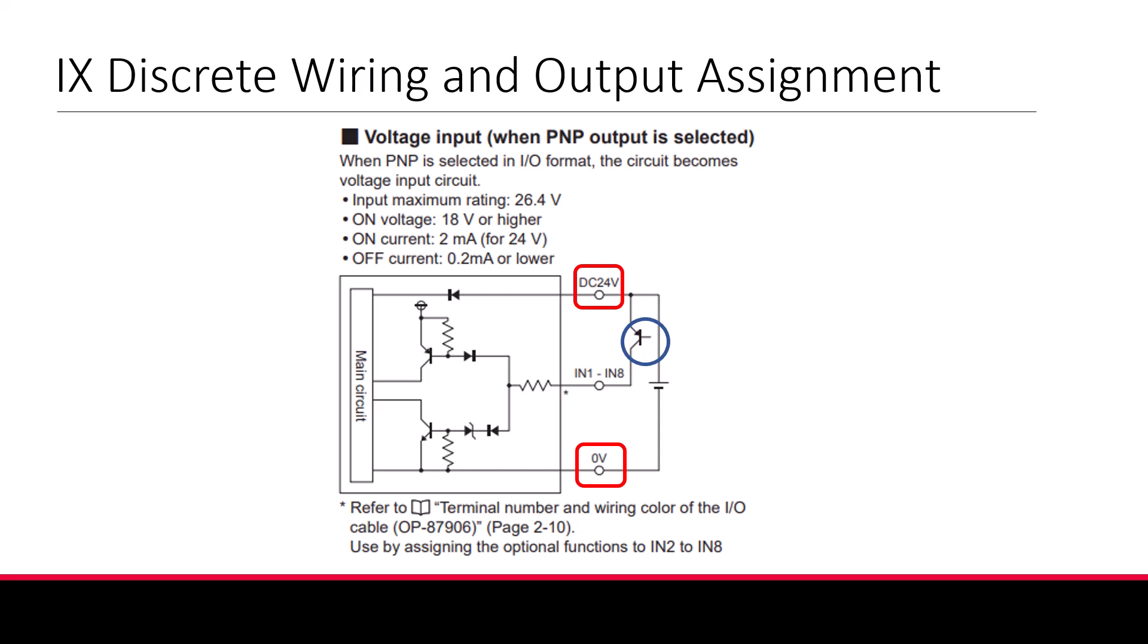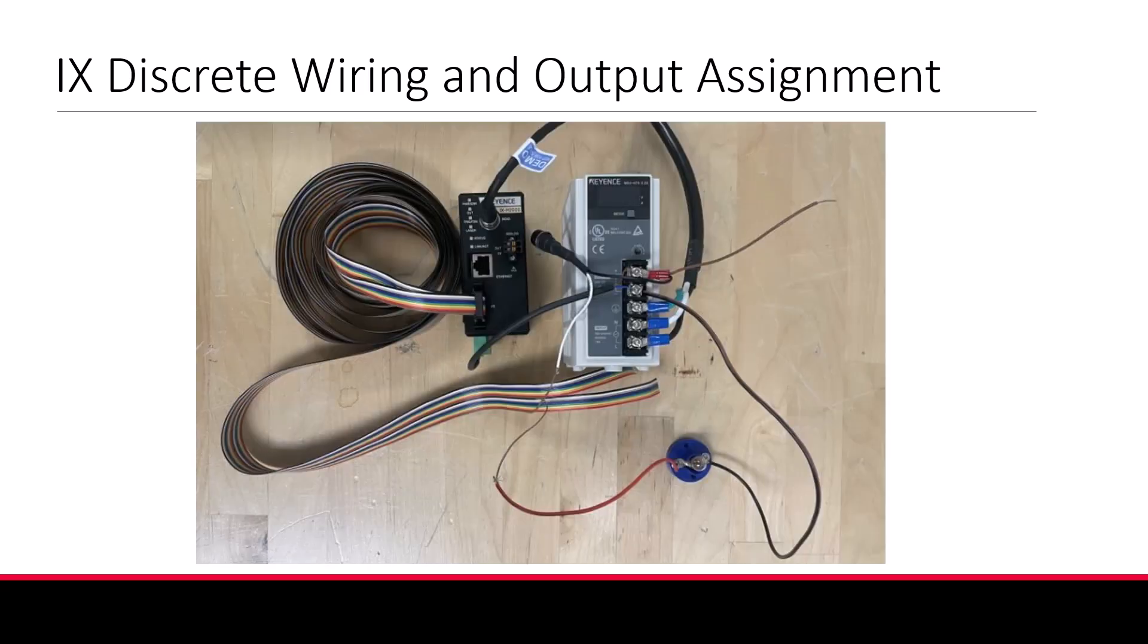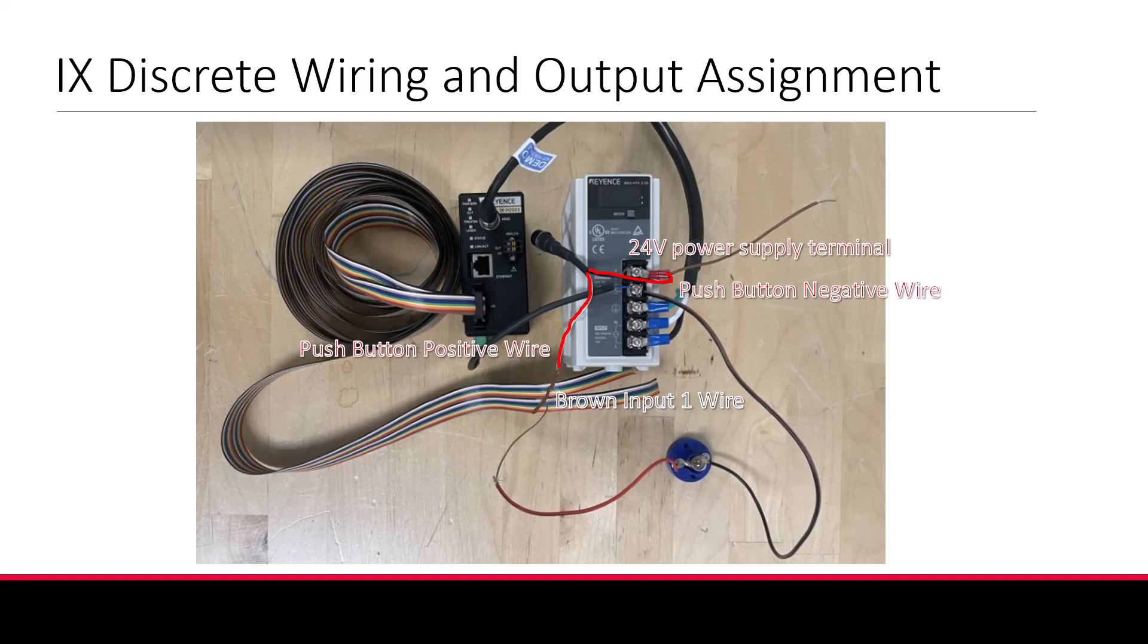You'll see we have to wire our push button to the 24V terminal of the power supply that's powering the iX, and to the input wire we'd like to use. We'll be using input 1, our bottom brown wire, to establish an external trigger. So I'll first wire my brown input 1 to my push button's positive wire. I've done this by tying the two wires together, but in the field it's most common to use something like a screw terminal. Next we'll wire the negative wire of the push button to the 24V terminal of the power supply. We've now successfully completed the hardware setup of our input circuit.